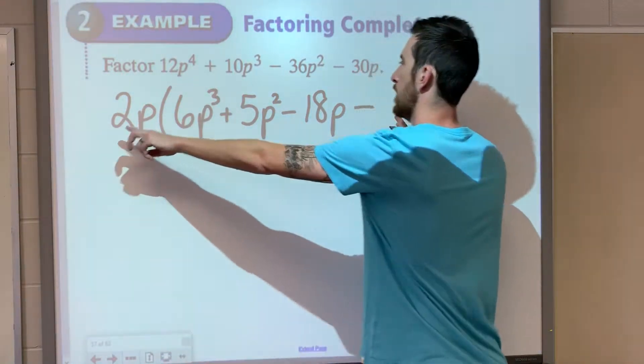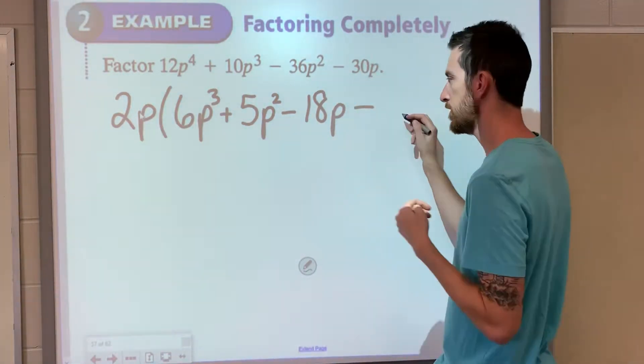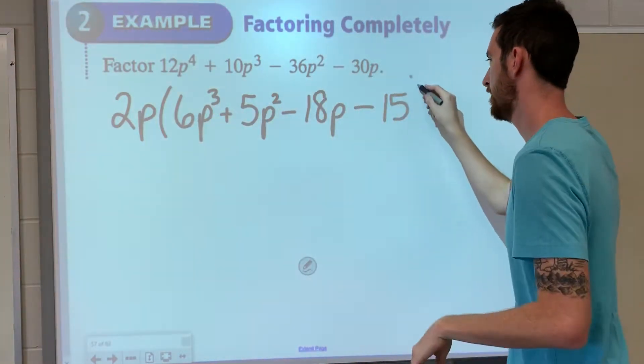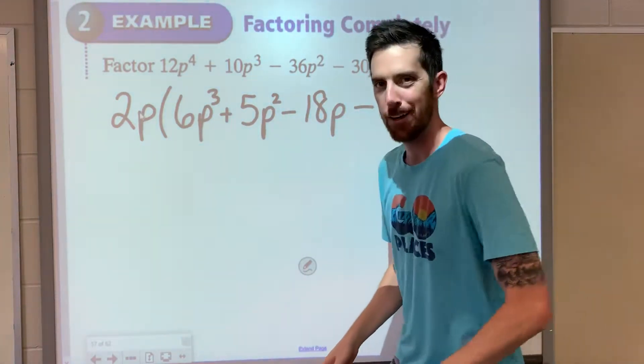Another minus, 2 times what gives us 30? 15. And we've already got p. We don't need any more p. What are you, a toilet?